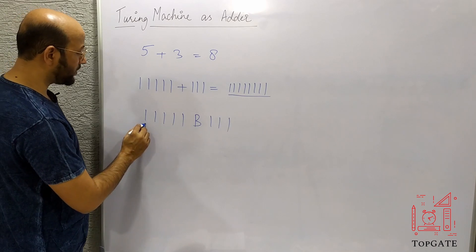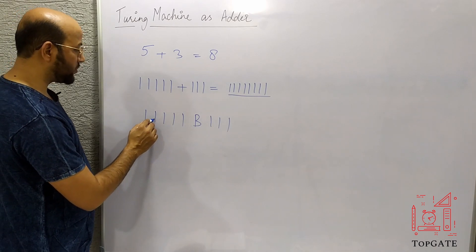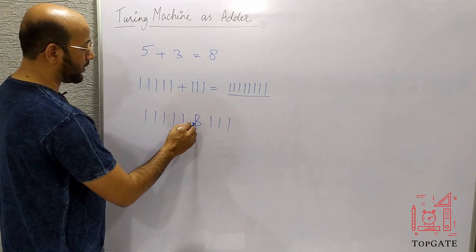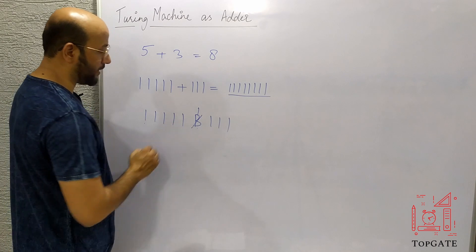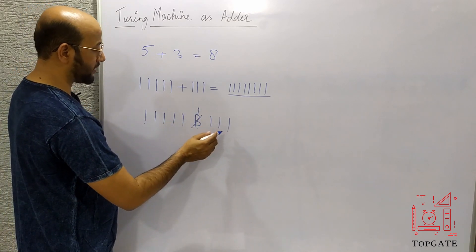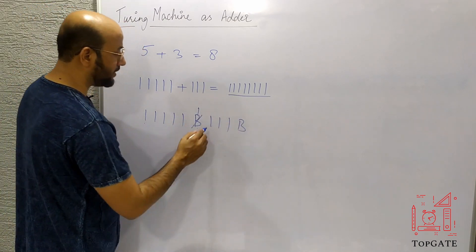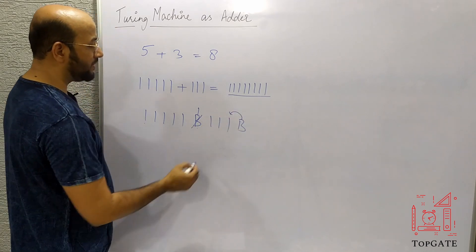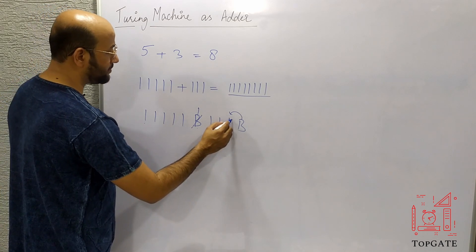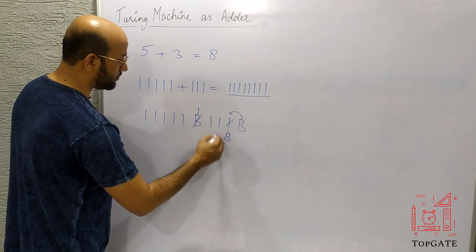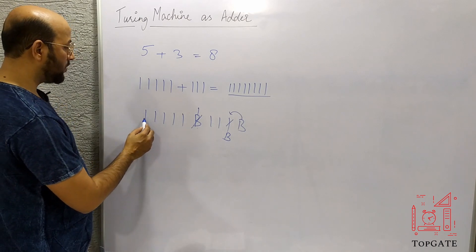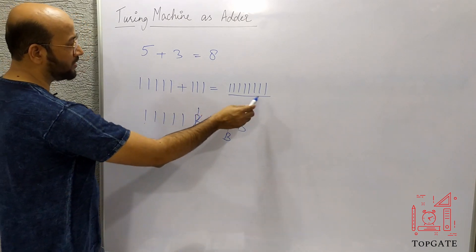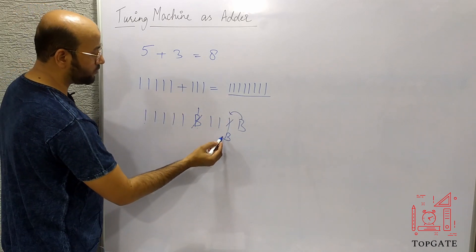Starting from the first one, skip all the ones, then move to the separator B and change it to one. Move to the right, skip the remaining ones, and when we find a blank we take a left turn and change the last one to B. In total the tape now has eight ones.